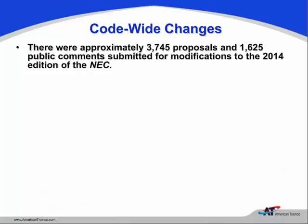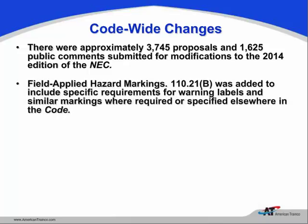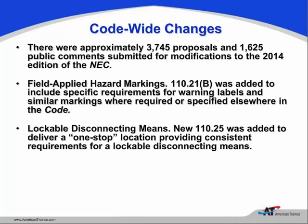Let's look at code-wide changes—what the committee calls global changes. There were 3,445 proposals and a lot of public comments, and it took the technical committees time to work through these changes. One global change that appears throughout the whole code is 110.21B, which is going to be patterned after the ANSI Z535 standard. Another global change involved 46 proposals to relocate all requirements for lockout tagout into one section—110.25.